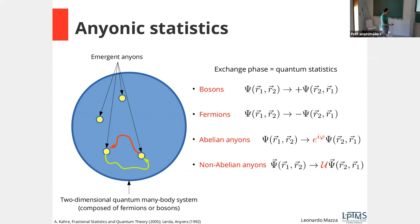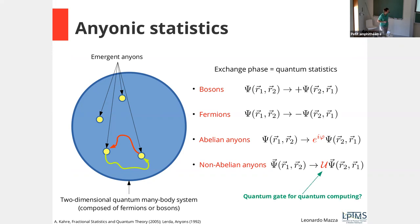For Abelian anyons, you pick up a generic phase. For non-Abelian anyons the situation is more interesting: the ground state is degenerate, and the adiabatic motion is represented by a unitary matrix acting on that degenerate subspace. There has been a lot of excitement about this, because these unitary matrices have been proposed as quantum gates for topological quantum computation — the idea being that you can store and manipulate information by moving anyons around each other.